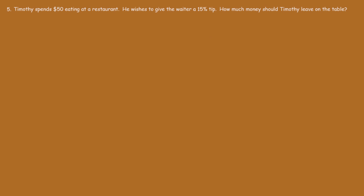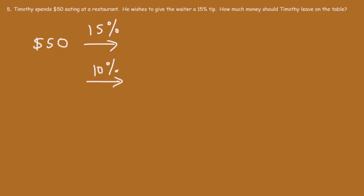Now let's move on to the next problem. Timothy spends $50 eating at a restaurant and wishes to give the waiter a 15% tip. How much money should Timothy leave on the table? To calculate the tip, we need to find 15% of $50. Let's use mental math. First, let's calculate 10% — to find 10% of a number, just move the decimal one unit to the left. So 10% of 50 is simply $5.